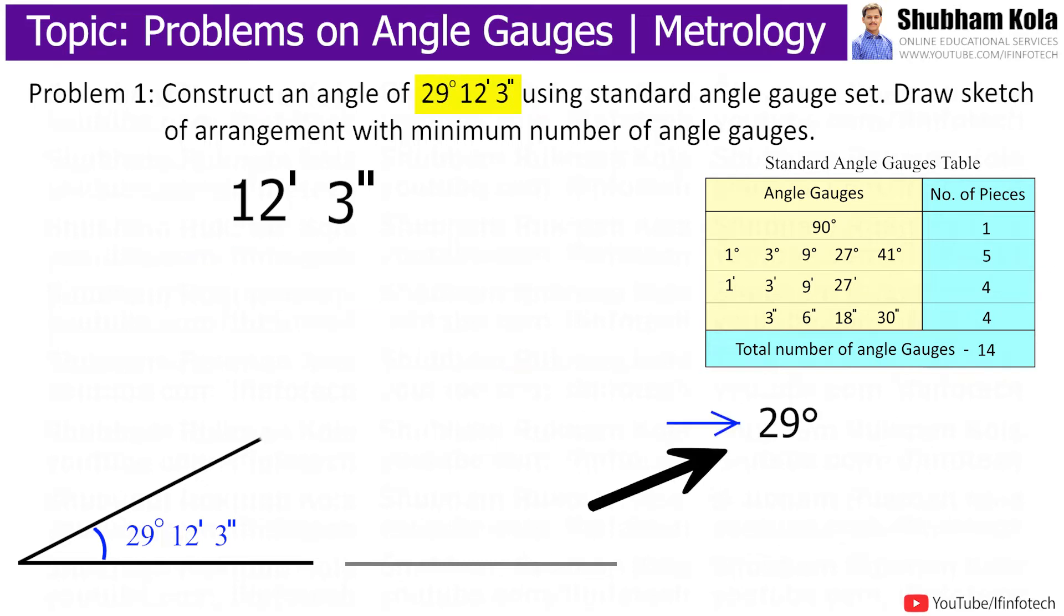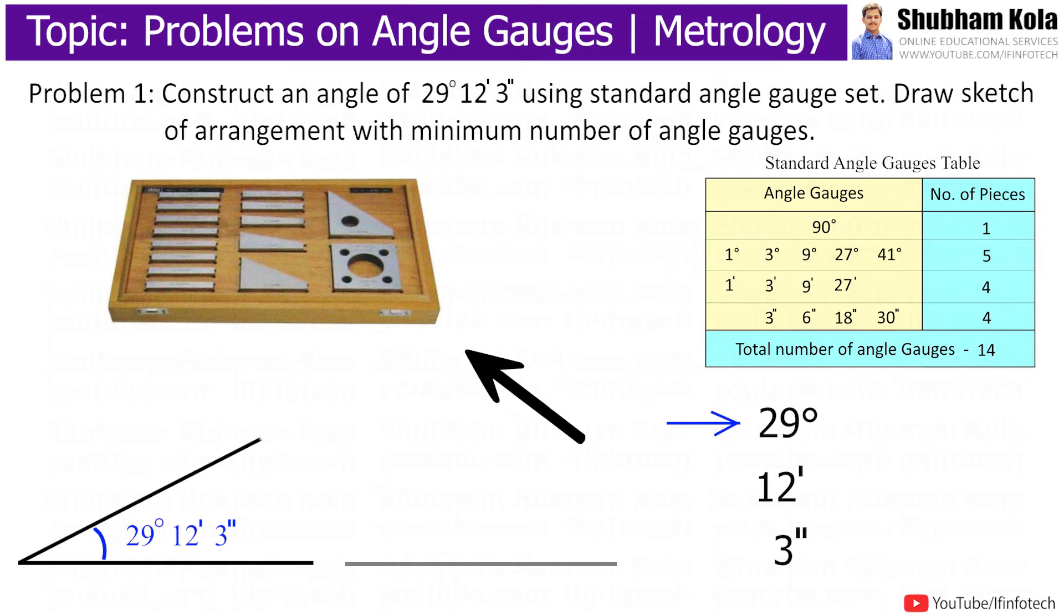To construct an angle of 29 degrees, 12 minutes, and 3 seconds, we have a standard angle gauge set where the available angle gauges are 1 degree, 3 degrees, 9 degrees, 27 degrees, and 41 degrees.